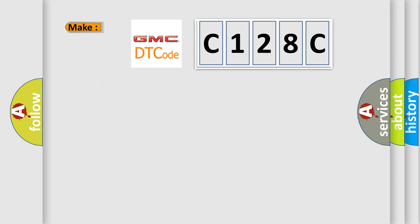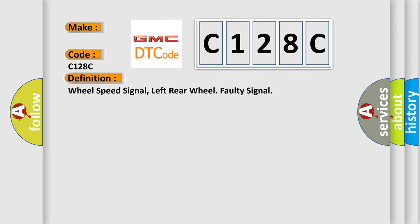So, what does the diagnostic trouble code C128C interpret specifically for GMC car manufacturers? The basic definition is wheel speed signal, left rear wheel faulty signal.